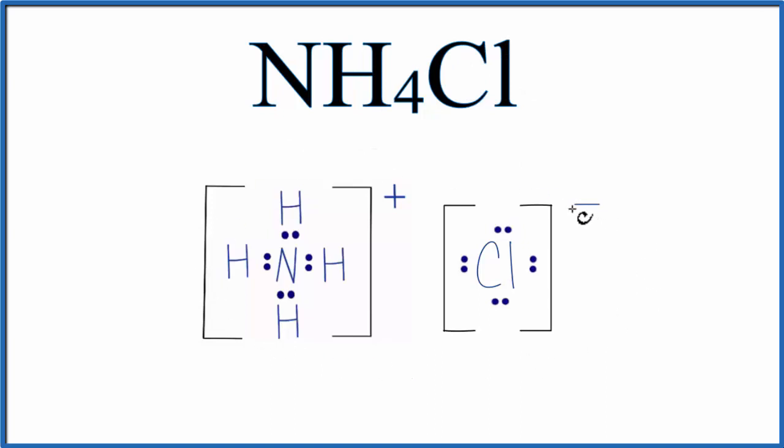When we draw the Lewis structure, we can see that we have a positive charge here on the ammonium ion and the chloride that's negative. And that positive and negative, those attract. They're electrostatic opposites and they're attracted, and that forms the ionic bond between the NH4 and the Cl.